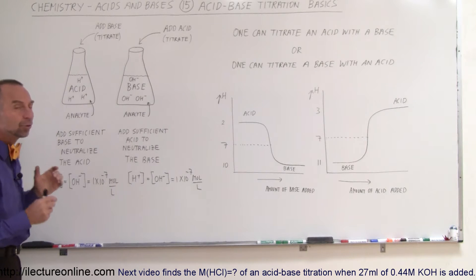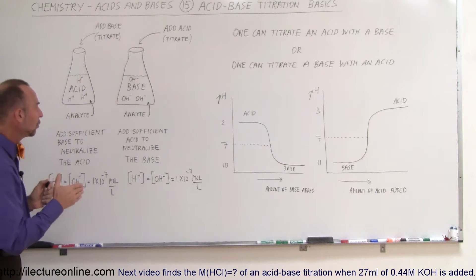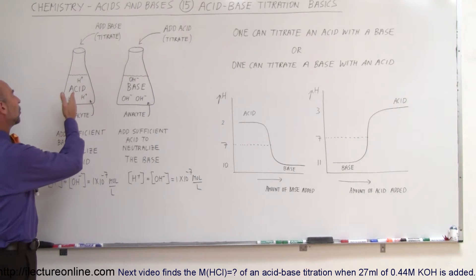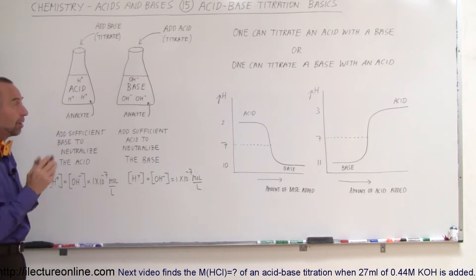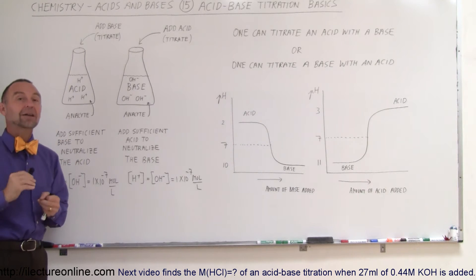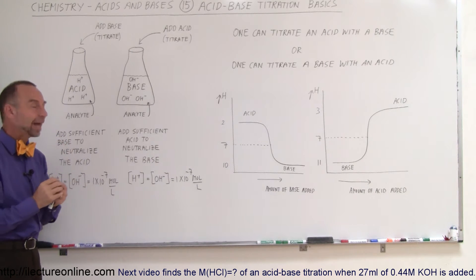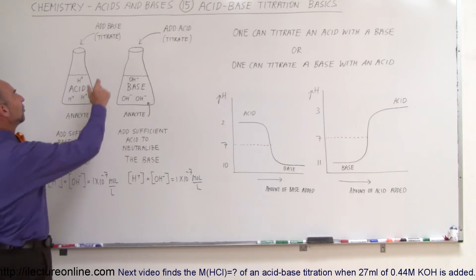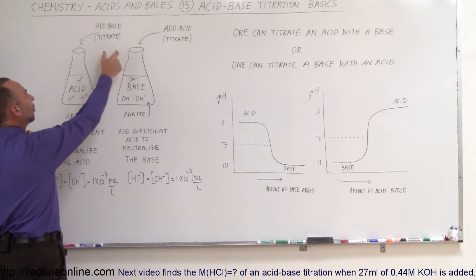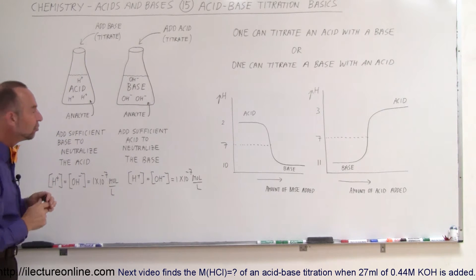That's called the analyte because we're trying to analyze the acid. What we're trying to do is figure out what the original pH was. Perhaps we have a large vat of acid and we take a small amount and titrate it. That means we're going to add a small amount of base to the acid, a known base with a known pH.